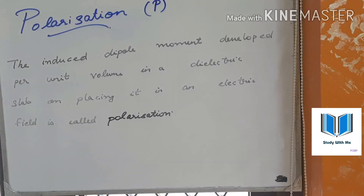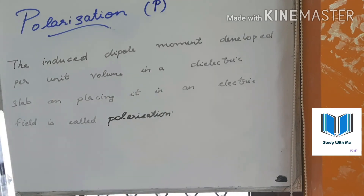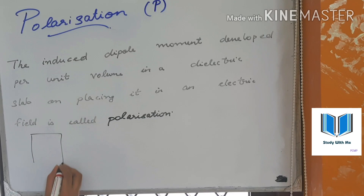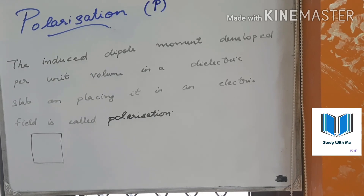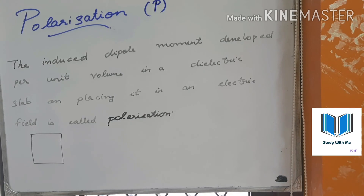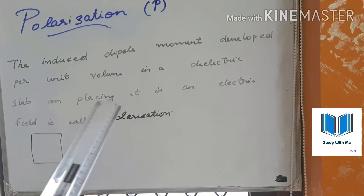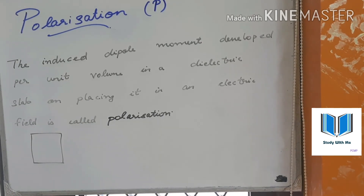Polarisation: the induced dipole moment per unit volume in a dielectric slab on placing it in an electric field is called polarisation. When we place a dielectric slab in an electric field, the induced dipole moment per unit volume is polarisation.